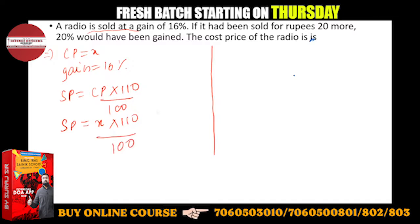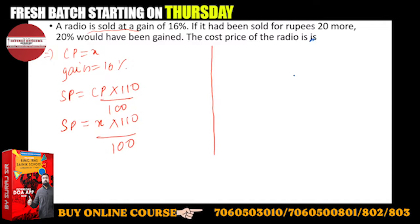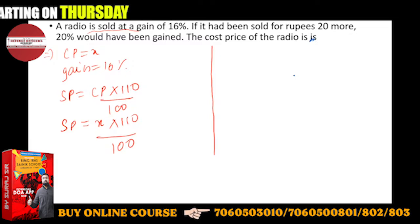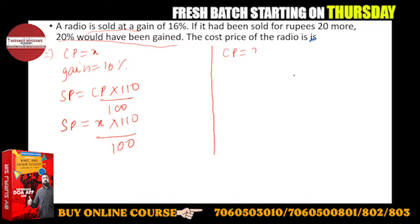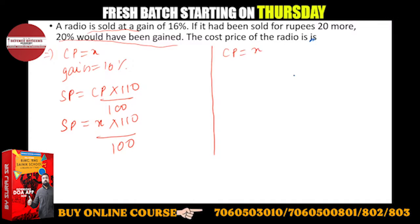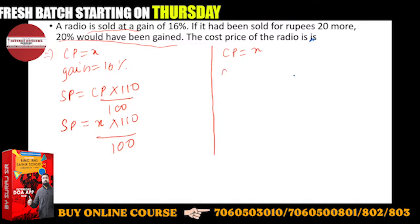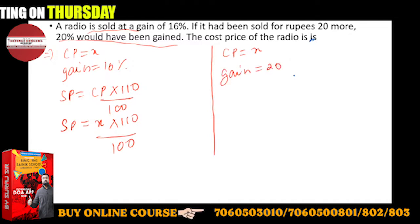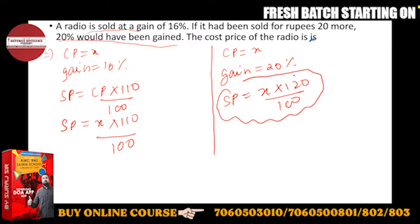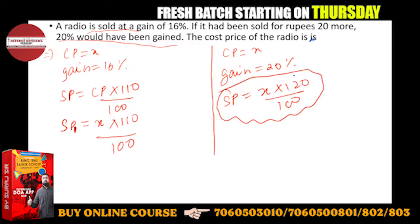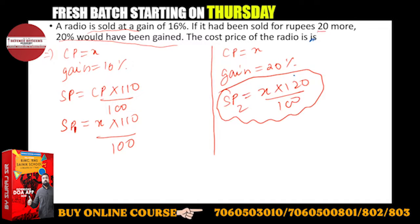In this case, if it had been sold for rupees 20 more, 20% would have been gained. So my CP will be the same in this condition also, CP will be X. And the gain is 20%, so SP is a function of CP times 120 upon 100. Suppose this is SP1 from condition one, this is SP2. SP2 minus SP1, the difference will be 20.